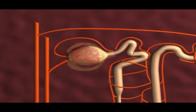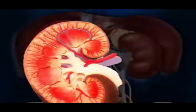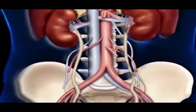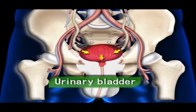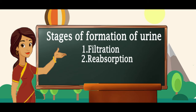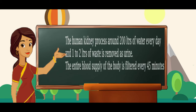The waste products like urea, left over from the breakdown of proteins, is redirected as urine through ureters. This completes the stages of formation of urine involving filtration, reabsorption and secretion. Human kidneys process around 200 liters of water every day and 1-2 liters of waste is removed as urine.